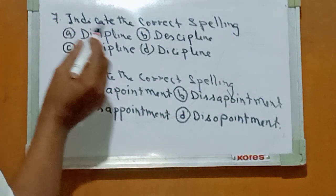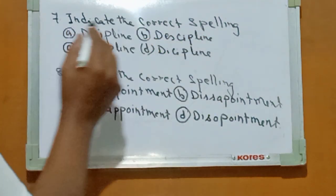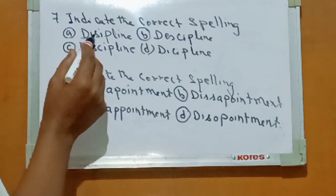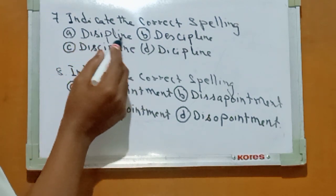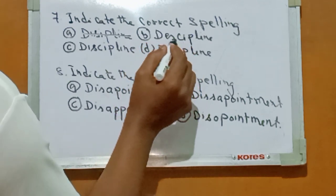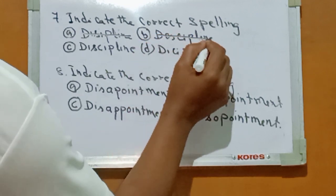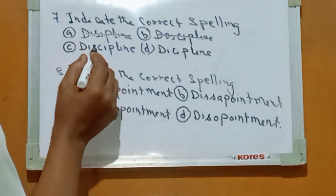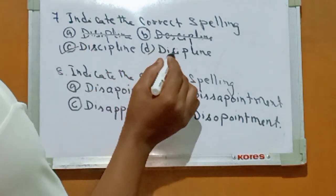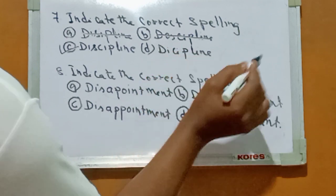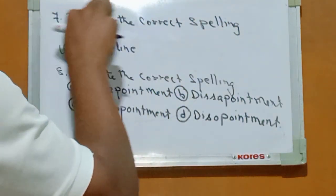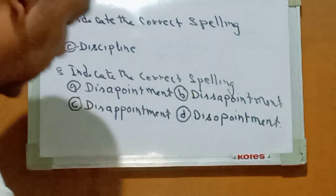Number seven: indicate the correct spelling. Option A: D-I-S-I-P-L-I-N-E — discipline, that is wrong. Option B: D-I-S-C-I, C-P-L-I-N-E — wrong. Option C: D-I-S-C-I-P-L-I-N-E — discipline, this is right. Option D: D-I-C-I-P-L-I-N-E — wrong. Number seven right answer: Option C.